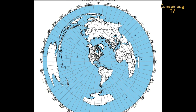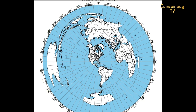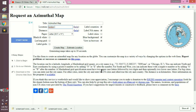Let me first explain what azimuthal equidistant projection means. It is a projection of a globe onto a flat surface. You can make an AE projection of a globe online — you choose the center of the map and the projection will show you correct distances from that chosen point to all other places in the world, considering that you are on a globe.